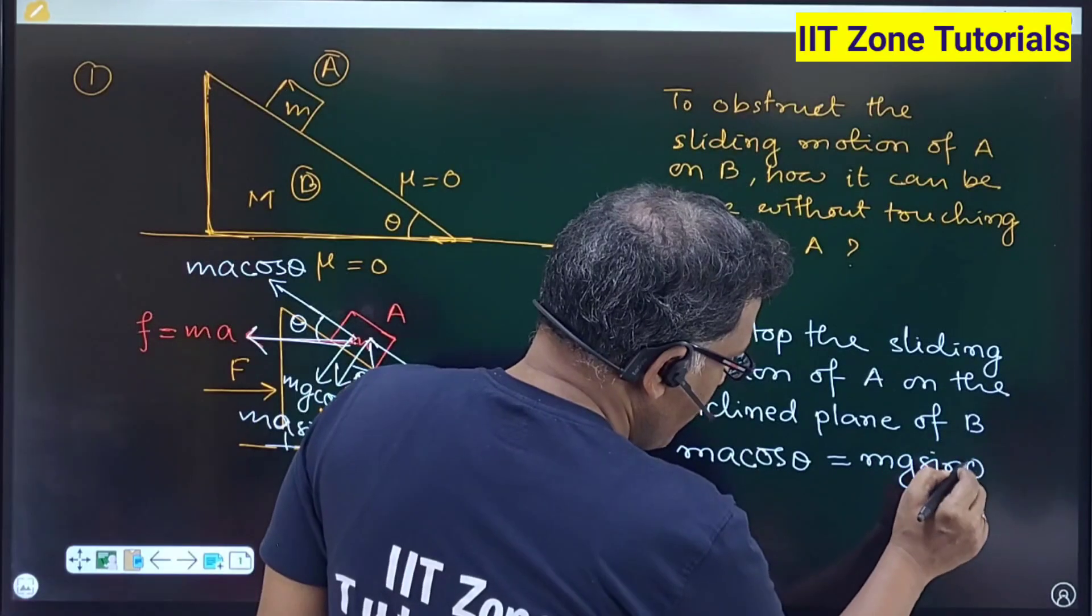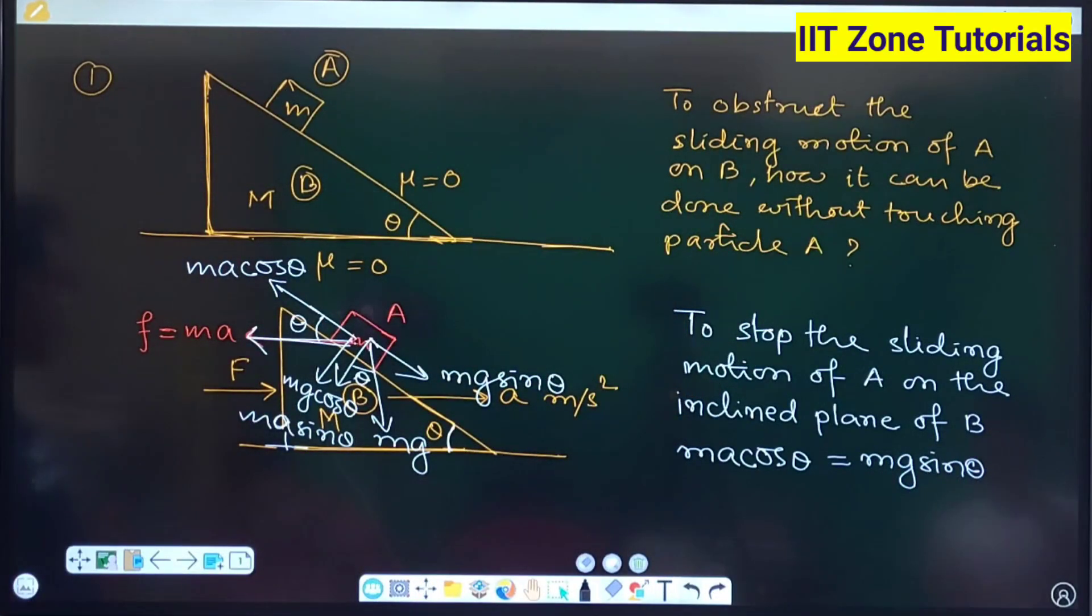which sliding can be possible, that is Mg sin theta. Which one? No, why it would be capital M? It is the small m receiving the pseudo force, capital M is receiving the external force.